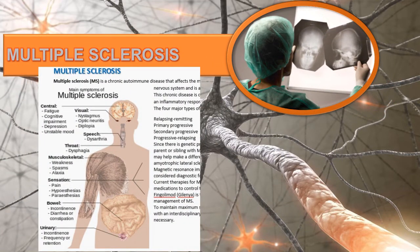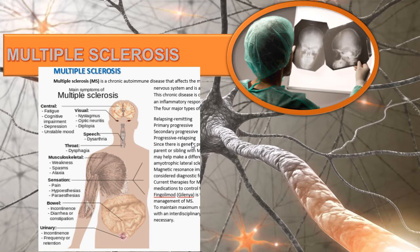Multiple sclerosis is a chronic autoimmune disease affecting the myelin sheath and conduction pathways in the central nervous system, and is a leading cause of neurological disability among young people. The four major types are relapsing-remitting, primary progressive, secondary progressive, and progressive relapsing MS. There is a genetic predisposition; having a first-degree relative with MS increases risk. MRI may show plaques diagnostic for MS. The goal of treatment is to maintain maximum strength, function, and independence, and to ensure continuity of care and rehabilitation resources.